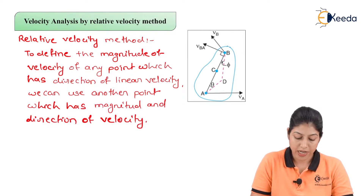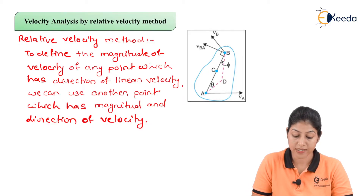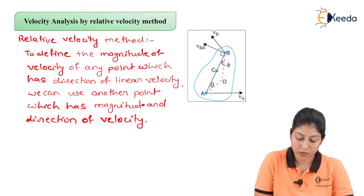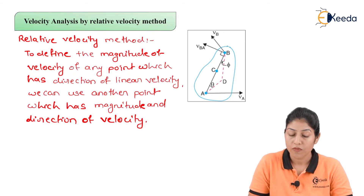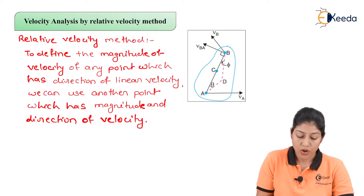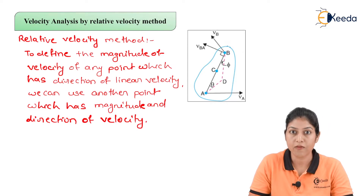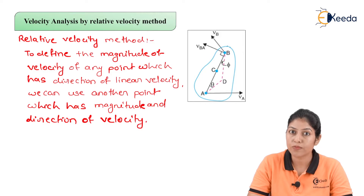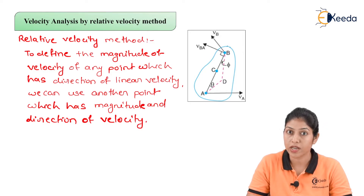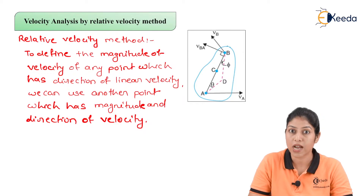As per the statement, if we want to define the magnitude of velocity of any particular point which has direction only, we can use another point which has both magnitude and direction of velocity. I am going to discuss this statement with the help of a diagram, and this statement represents the relative velocity method — defining the velocity of any particular point with respect to another point.